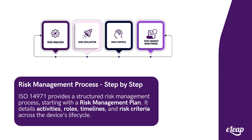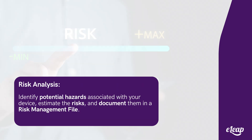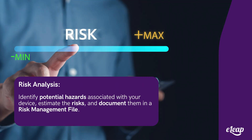ISO 14971 outlines a structured process for managing risk, starting with the risk management plan. This document specifies all the risk management activities needed throughout the device's lifecycle, including roles and responsibilities, timelines, and risk acceptability criteria. Let's explore the key stages of this process.